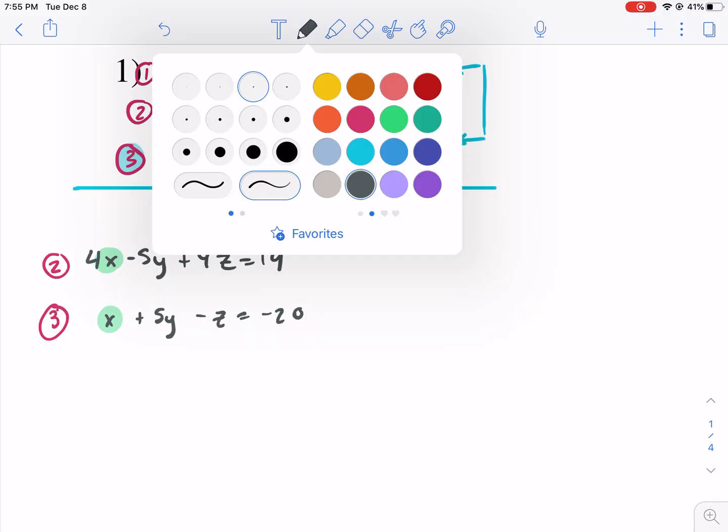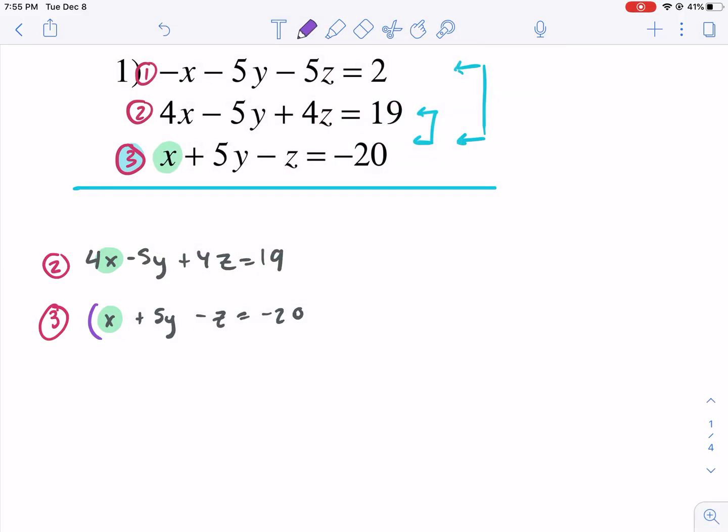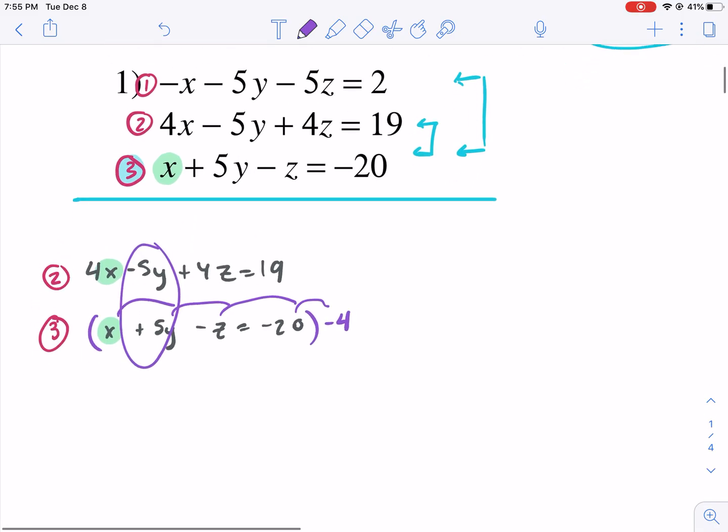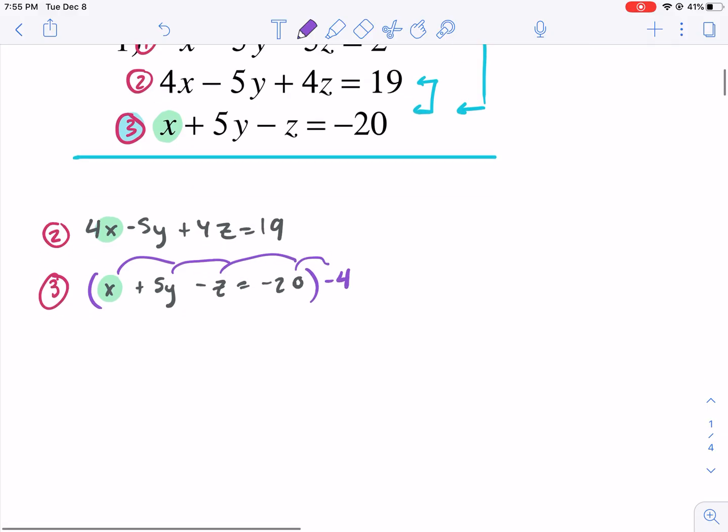4x minus 5y plus 4z equals 19. And three, we have x plus 5y minus z equals negative 20. Now here's the deal. We already said our focus variable was going to be x. So we want to eliminate it. So what do we do? Well, my strategy as I've been talking all along is getting the coefficients to be opposite. So I'm going to multiply this by negative four. And when I multiply by negative four, I have to multiply each one of these terms by negative four. Now you're probably thinking, whoa, whoa, whoa, look, the y's are just perfect for eliminating. And you'd be right.